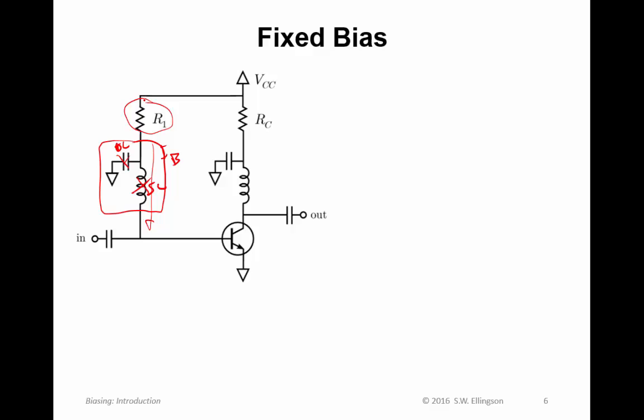In any event, at DC this is going to be a short circuit and this is going to be an open circuit. So this is the case we want to consider for the bias circuit design. Now in fixed bias, what happens is the collector pin is tied to the supply through a resistor, and the base pin is connected to the power supply through another resistor. So the values of these resistors determine the currents that are flowing in each case.